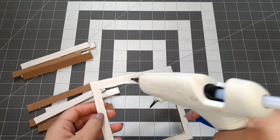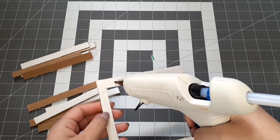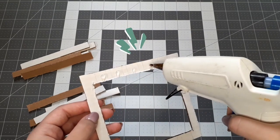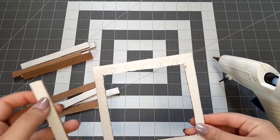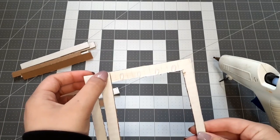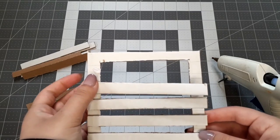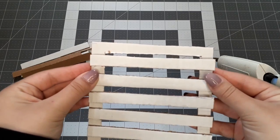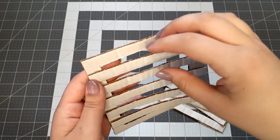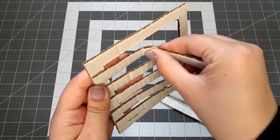So we're going to start out by gluing five of the cardboard strips to one side of the square, evenly spaced from each other. To make the weaving process easier, bend all the cardboard strips so that they are flexible.